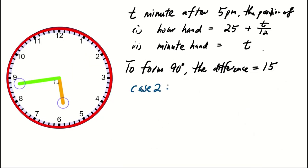For case 2, with the minute hand ahead of the hour hand, we have the equation T - (25 + T/12) = 15.